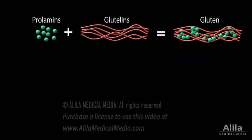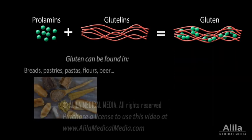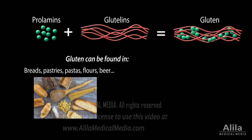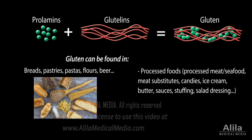For this reason, apart from obvious sources, gluten can also be found in a variety of processed foods, including meat and meat substitutes, as well as medications and nutrition supplements.